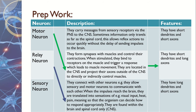The relay neuron is the connecting neuron between the motor and the sensory neurons — they allow communication between them. When impulses reach the brain, they're translated into different sensations. Relay neurons are found only within the brain and the spinal cord, and they have short dendrites and short axons.